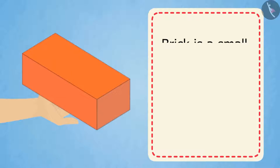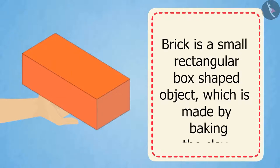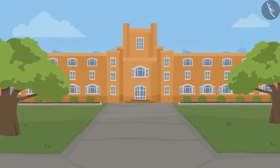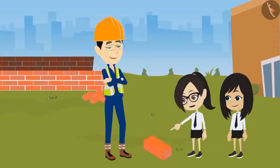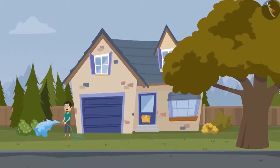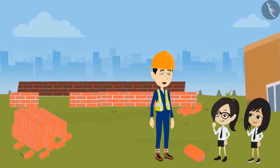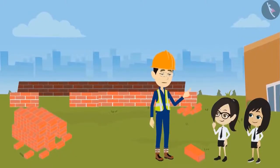This red color small box-shaped object you are looking at is called a brick. A brick is a small rectangular box-shaped object which is made by baking clay. So are the walls of our school also made of bricks? Yes, and not just this school — your home, all the buildings in this city, and bridges are all made of bricks. Bricks are used in almost every construction work.